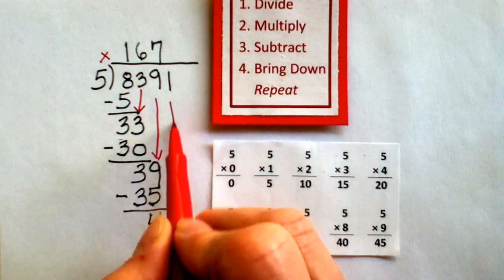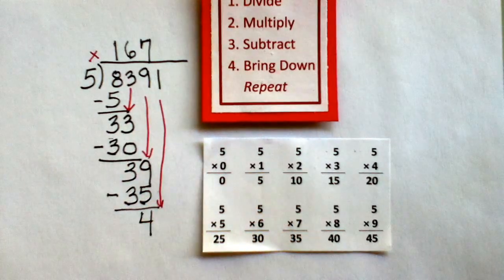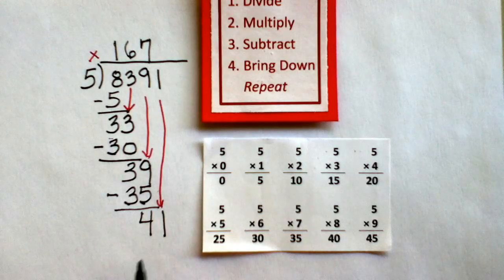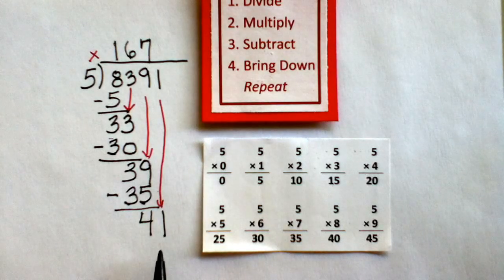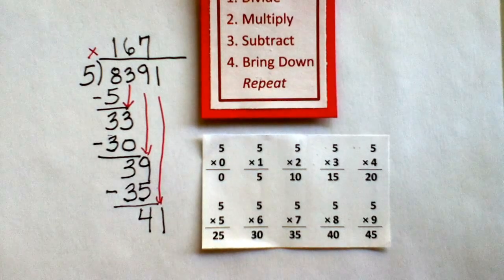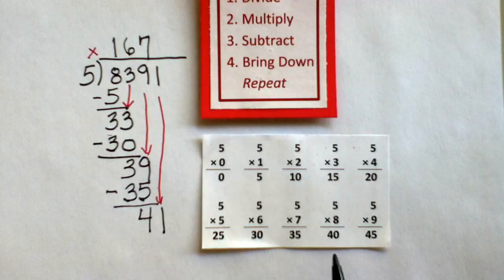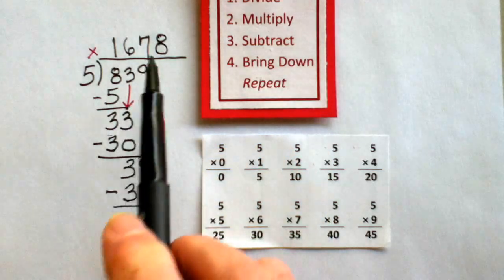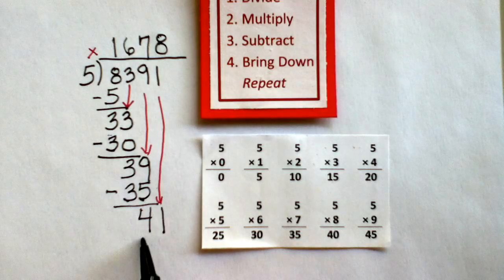Bring down the next number, which is a 1. And I repeat that process. Now I'm looking at the number 41. Does 41 divide by 5? And the answer is yes. 5 times 8 is 40. And I multiply. 8 times 5 is 40.